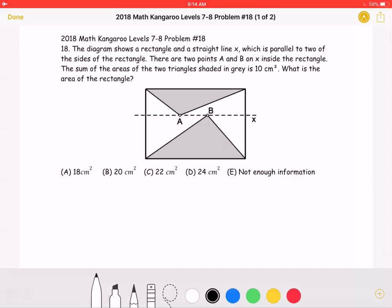The diagram shows a rectangle and a straight line X, which is parallel to two of the sides of the rectangle. There are two points, A and B, on X inside the rectangle.